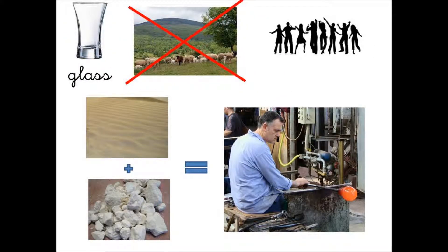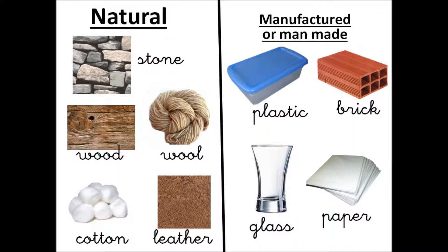Natural: stone, wood, wool, cotton, leather. Manufactured or man-made: plastic, brick, glass, paper.